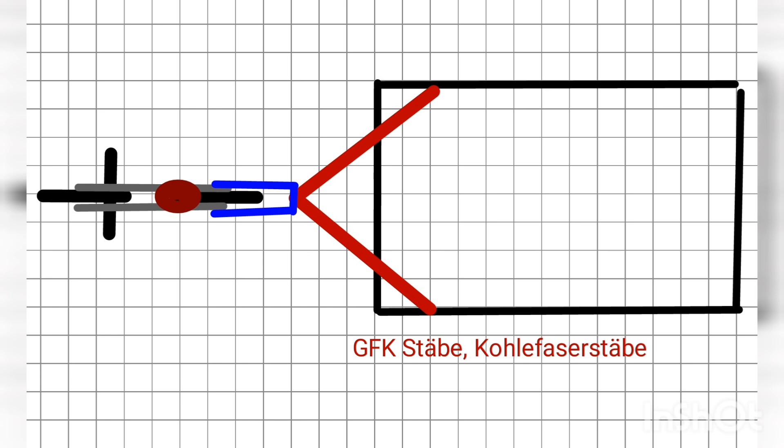GFK has the property of being permanently elastic, and one would have to find out how strong this GFK should be so that the wagon itself doesn't wobble and swing too much.